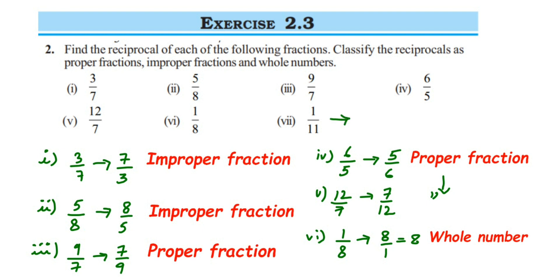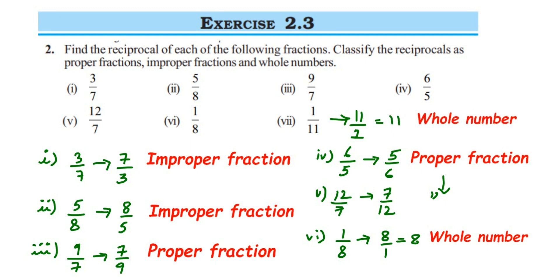The last one is 1 by 11, which is similar to the previous one — like 1 by 8. When you take the reciprocal, it becomes 11 by 1, which is the same as 11. And 11 is a whole number, so the last question is also a whole number.